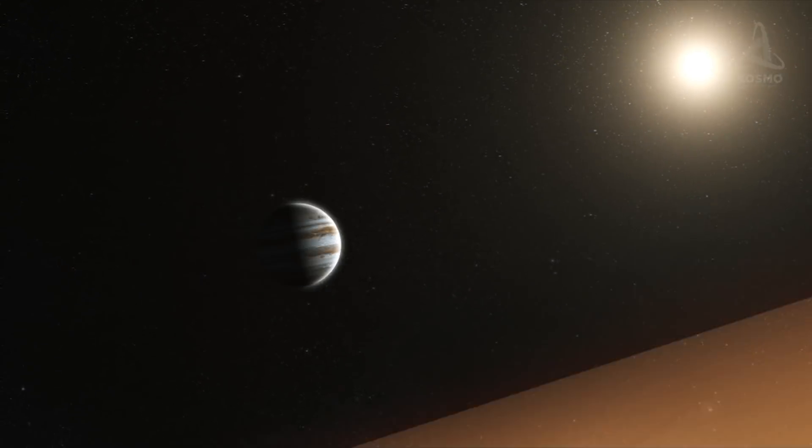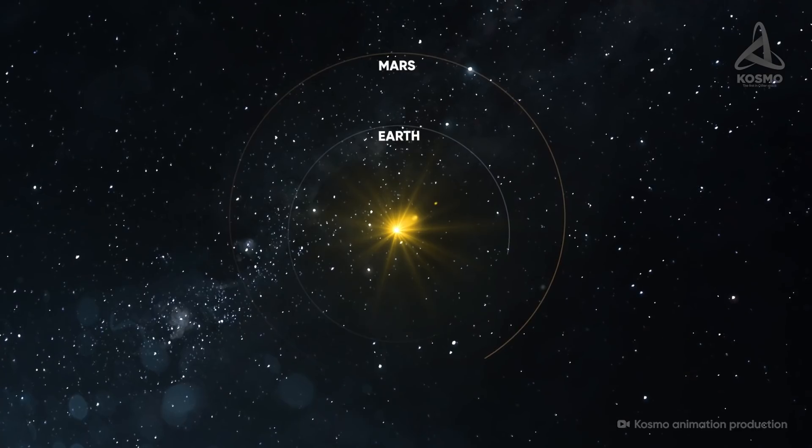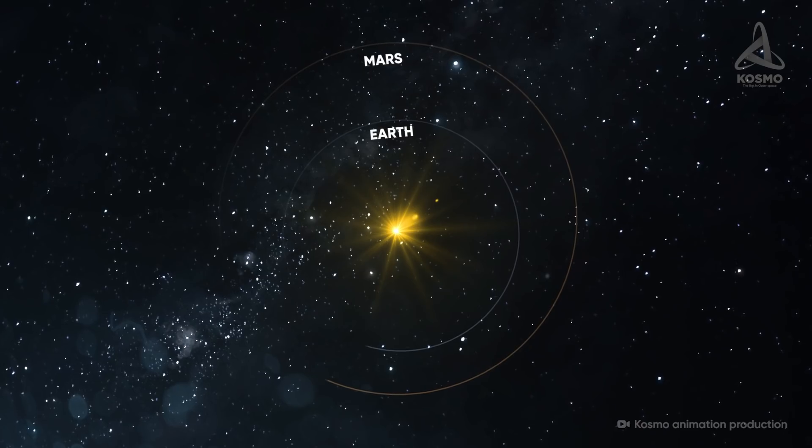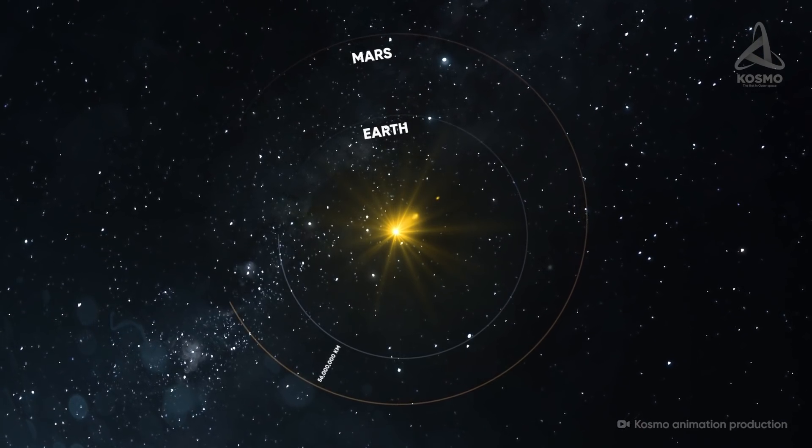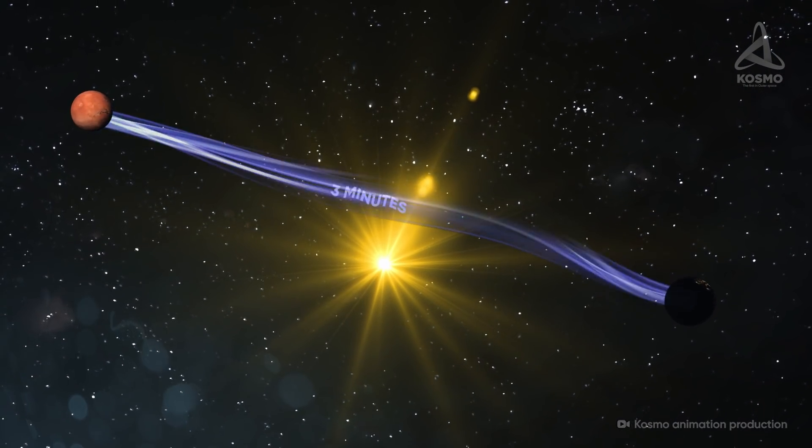Of all the planets in the solar system, Mars is the most suitable one for exploration. It regularly approaches our planet, with the distance between us becoming minimal, slightly under 56 million kilometers. Light and radio waves travel this far within a matter of three minutes.